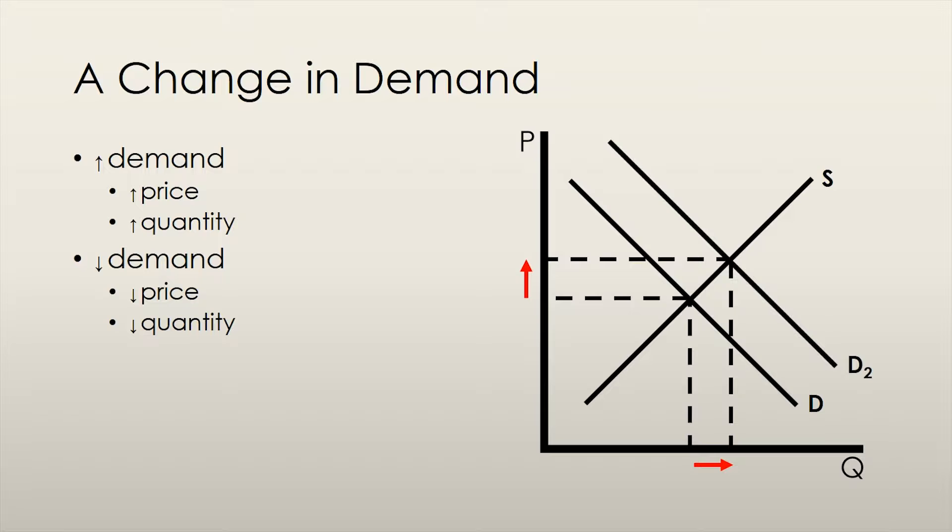All in all, an increase in the demand for a good will shift the curve to the right and result in a higher equilibrium quantity and price.